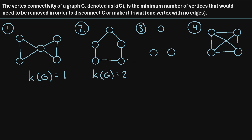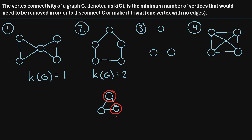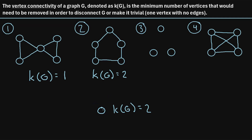It turns out that for any cycle graph, the vertex connectivity will always be 2. As the simplest example, consider a cycle graph with three vertices. If we remove two vertices we would be left with a trivial graph, so the vertex connectivity of that graph is also 2 — we had to remove two vertices to make it a trivial graph, which is just a graph with one vertex and no edges.